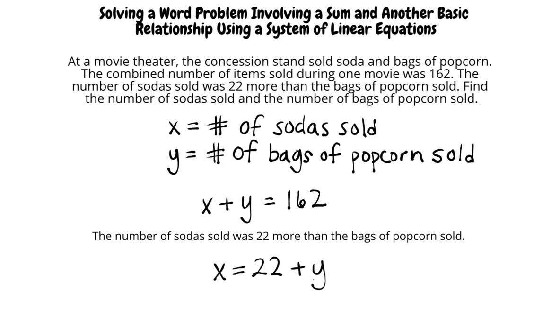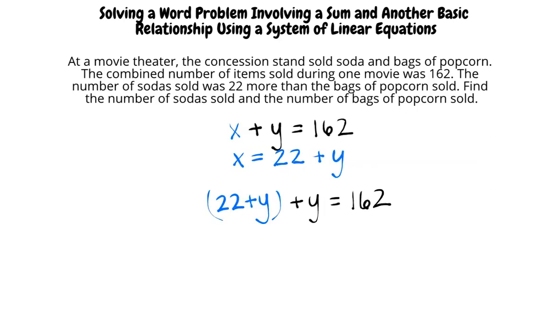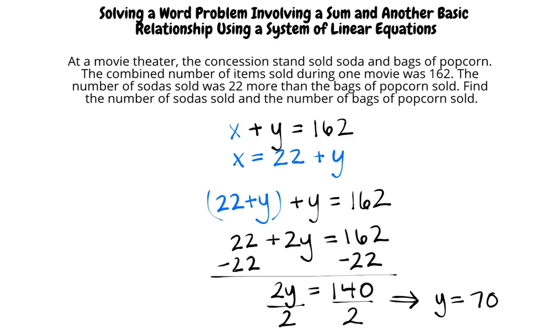Now we can solve the system of equations. We can use the substitution method and substitute 22 plus y from the second equation into the first equation for x. Now we can write 22 plus y plus y equals 162. Combine like terms and we write 22 plus 2y equals 162. Subtract 22 from both sides of the equation and write 2y equals 140. Last, divide both sides of the equation by 2 and write y equals 70.